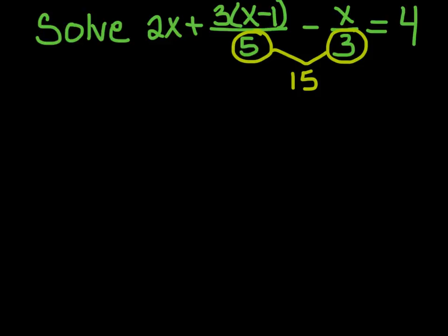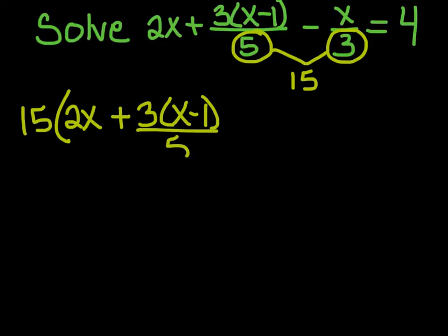So we're going to multiply everything by 15. I'm going to take 15 times 2x. I'm going to multiply it also by this group, 3 parentheses x minus 1 all over 5. I'm going to multiply it by negative x over 3. And I'm going to multiply it by the 4. All of it.